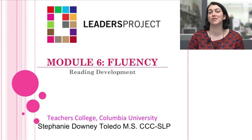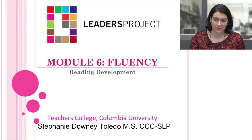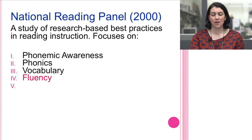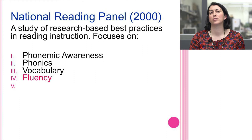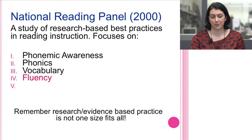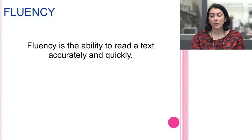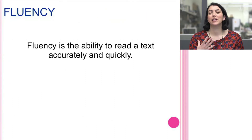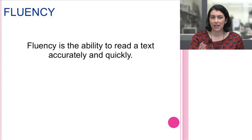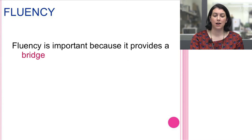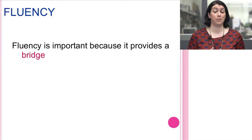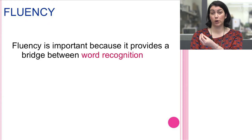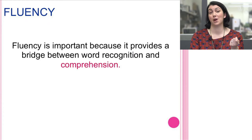This module will focus on fluency as one of the five components of reading development. We're looking at the five components that the National Reading Panel has outlined as crucial pillars to reading development. Fluency is the ability to read a text accurately and quickly, and it is important because it provides a bridge between word recognition and comprehension.